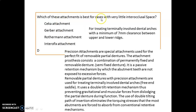The question is: which arrangement is best for cases with very little interocclusal space? The answer is intracoronal or intrafix attachment. Remember, precision attachments are used for treating terminally involved dental arches like free-end saddles, with a minimum 7 mm clearance between upper and lower arches. The name suggests they help for perfect fit of removable partial dentures. They are semi-fixed in nature — permanently fixed and also removable. They are a passive kind of retention mechanism and use a double-tilt retention mechanism, which prevents gravitational and muscular forces from dislodging the partial denture during function.